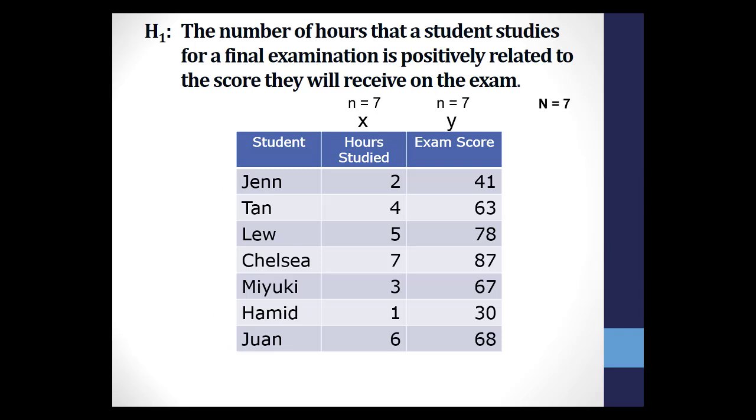Again, you'll need to know this to calculate degrees of freedom. You can calculate the mean for each set of numbers. So for hours studied, 2 plus 4 plus 5 plus 7 plus 3 plus 1 plus 6 equals 28. Divided by seven, the n for the x variable is 4. Do the same thing for the exam scores, the y variable, and you'll come up with 62 as the mean. So the mean of x is 4 and the mean of y is 62.